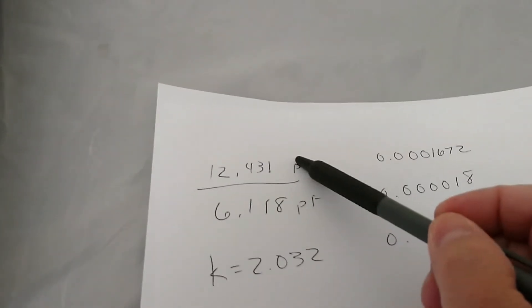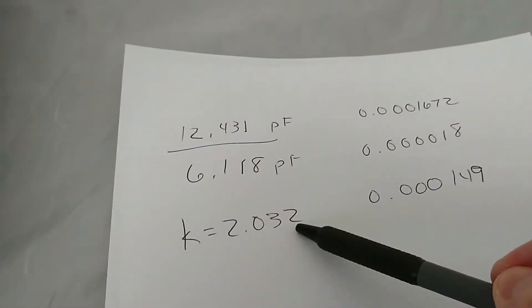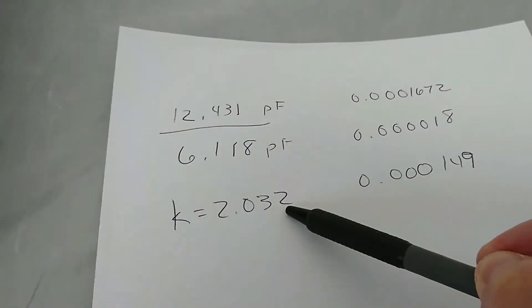At this point, we can basically take the capacitance we measured with the sample, divide it by the capacitance in air. That gives us a dielectric constant of 2.032.